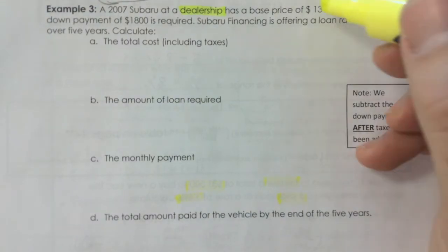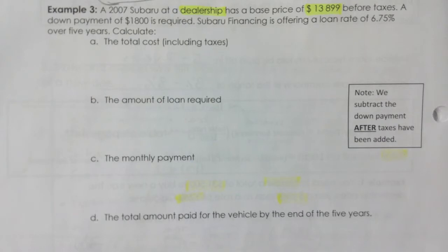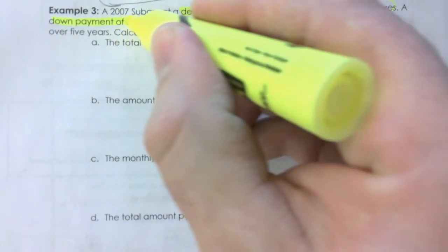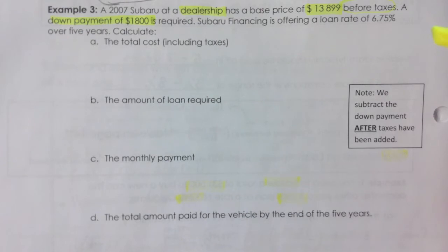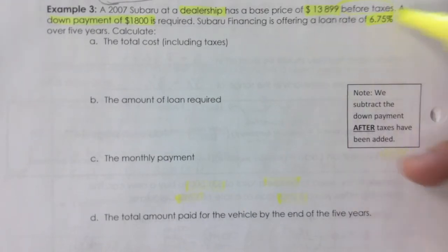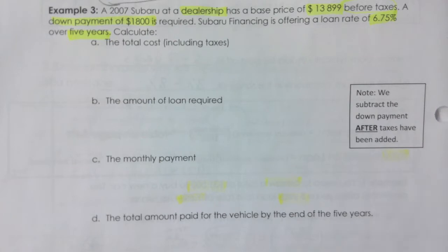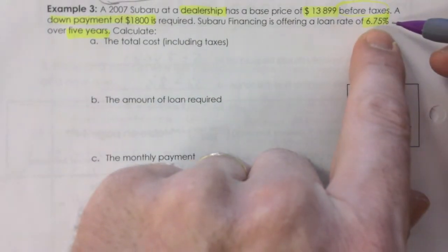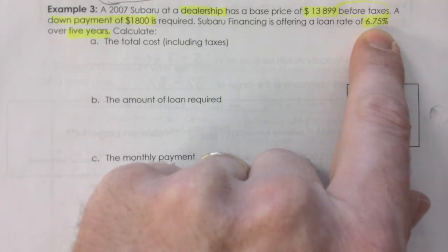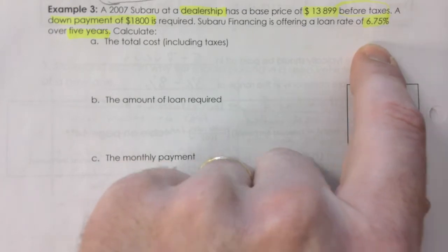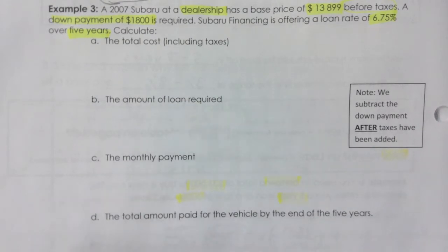Example three: you're buying a car at a dealership — that's important — at a base price of $13,899 before taxes. There is a down payment of $1,800 required. Subaru financing is offering you a rate of 6.75% over five years. This is going into financing. An interest rate is given as a percent, and later we'll find the actual dollar amount you spend on interest — for the whole five-year term or per month.